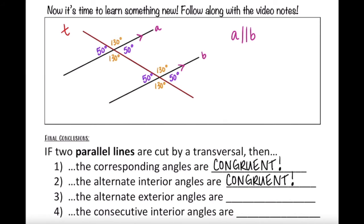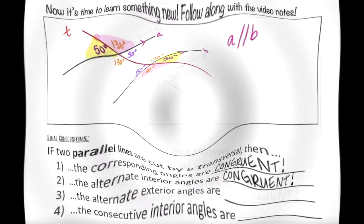The same can be said for alternate exterior angles. This 130-degree angle is alternate exterior to this 130-degree angle, and this 50-degree angle is alternate exterior to this 50-degree angle. It's no surprise that they are also congruent.